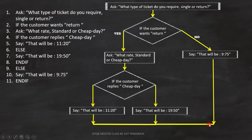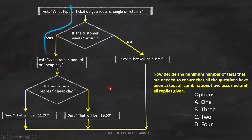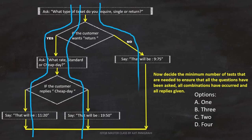With this, the flowchart is complete. Now let's see what we are asked to find. We have to decide the minimum number of tests needed to ensure that all the questions have been asked, all combinations have occurred, and all replies given. To do that, we have to find the path coverage. The question is indirect — since we have to ensure all questions are answered and all replies are given, we have to find path coverage. We have three different paths here, so we need three test cases to cover them. Therefore, option B — three — is the answer.